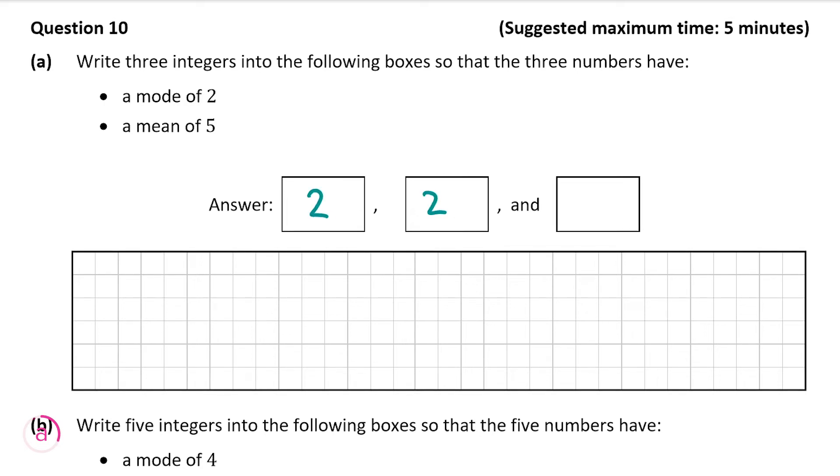Now to work out the third one we know that they have to have a mean of 5. So we plus 2 plus 2 and then some number x and divide it by 3 and then we're going to put that equal to 5 as we want the mean to be equal to 5. The reason it's divided by 3 is because we have three numbers in total.